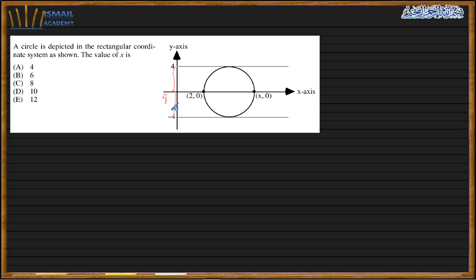Since the diameter is 8, the same diameter length applies in the other direction. To find x, I add 8 to 2, giving x = 10. The answer is D. I hope you got an idea of how these types of ACT geometry questions work. If you have any comments about the lesson or presentation, please share — it will help me a lot. Thank you for watching.